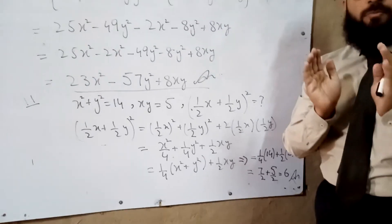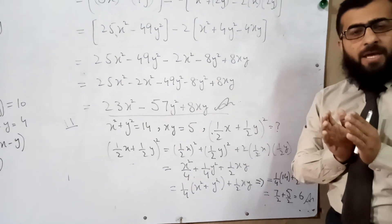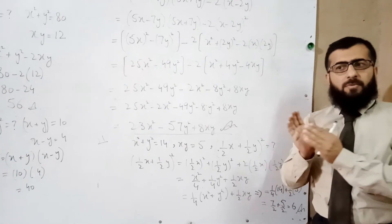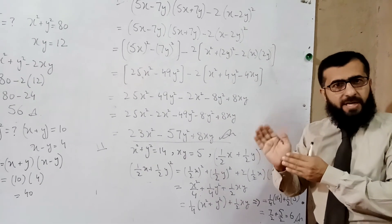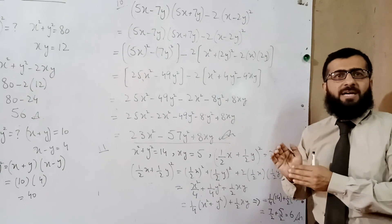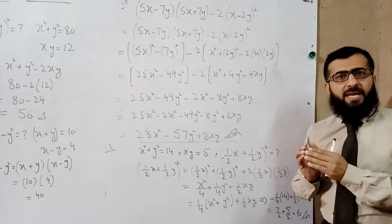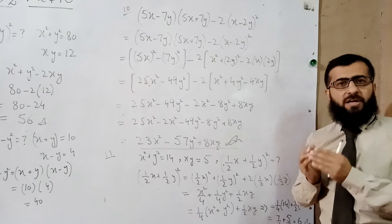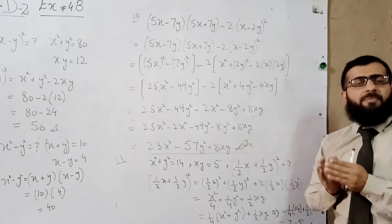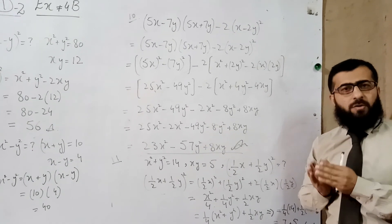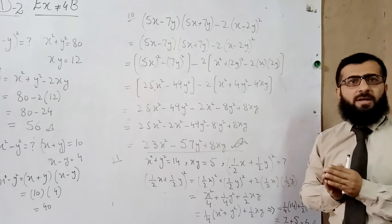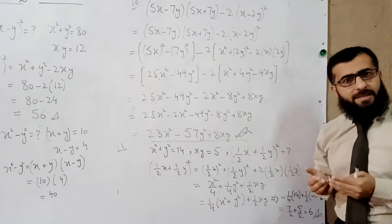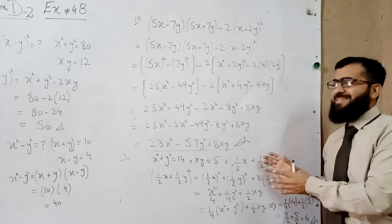You only need to look at what values are given and what you need to find. Check all three values and choose which formula you can apply. If you are given ab and x + y, apply (a + b)² or (a − b)². If given a + b and a − b, apply the a² − b² identity. These are the three formulas for this exercise.